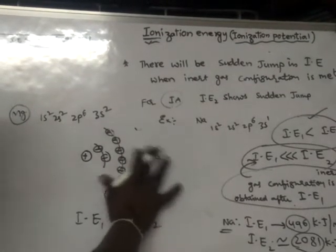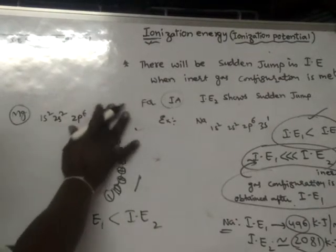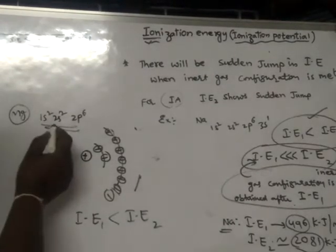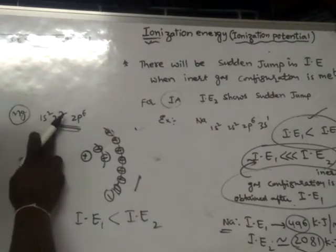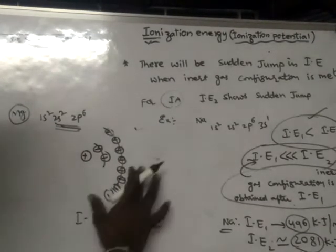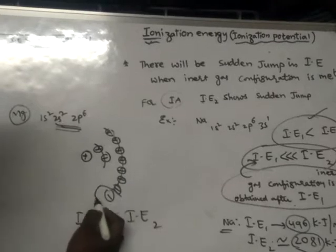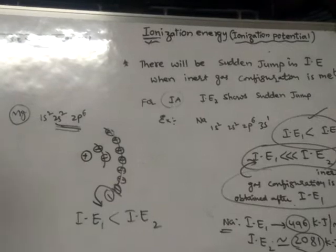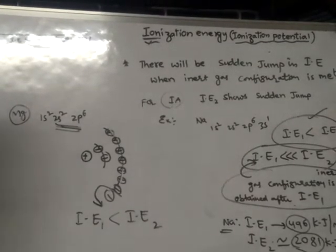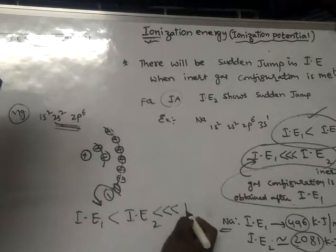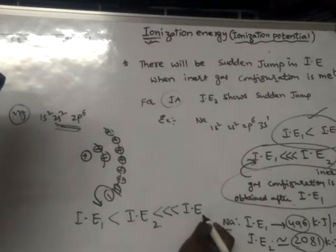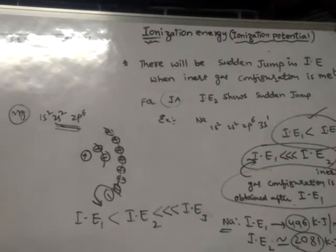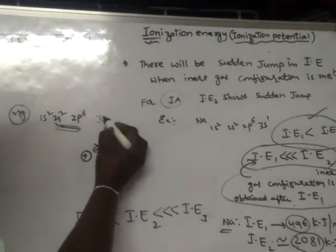In the magnesium atom, after removal of these two electrons, it is getting a stable inert gas configuration. So if I want to remove one more — the third electron — from this configuration, it requires a very, very large amount of ionization energy.